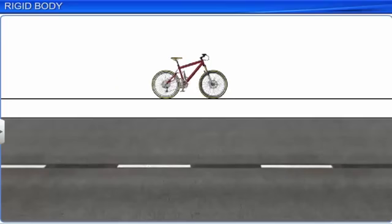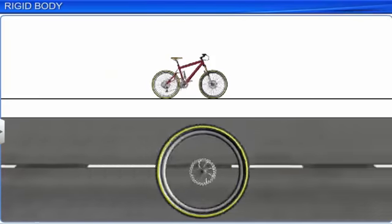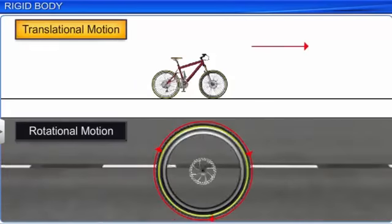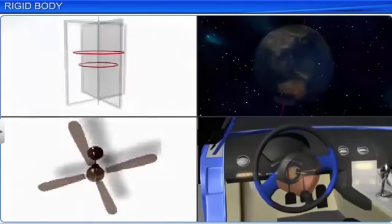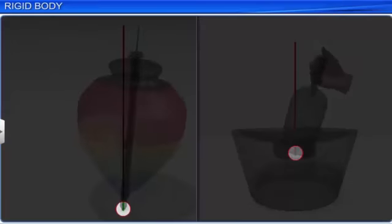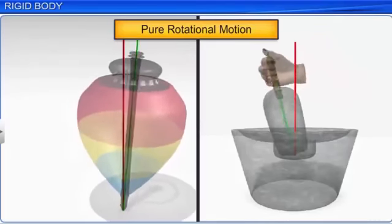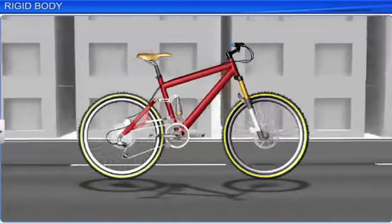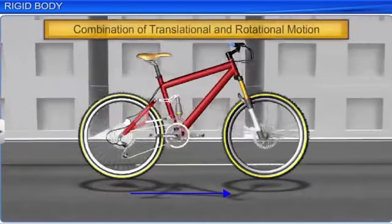Observe the motion of the rolling wheel of a bicycle. The motion of any rolling body is a combination of rotational and translational motions. If a rigid body is fixed to an axis or a point, its motion is pure rotational motion. If the rigid body is free, it can have pure translational motion or a combination of translational and rotational motion.